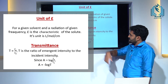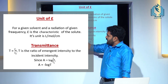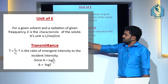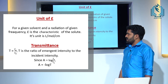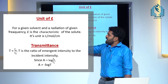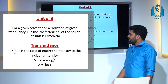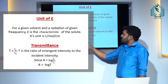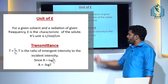Transmittance T equals Ix divided by I0 — that is, transmittance is the ratio of emergent intensity to incident intensity. Since A equals log(I0/Ix), we can rearrange this as A equals minus log T.